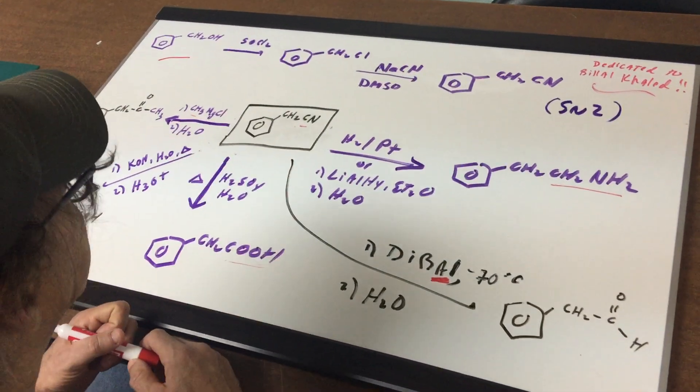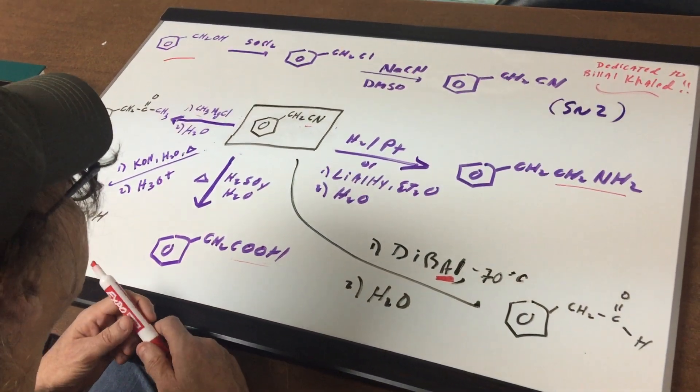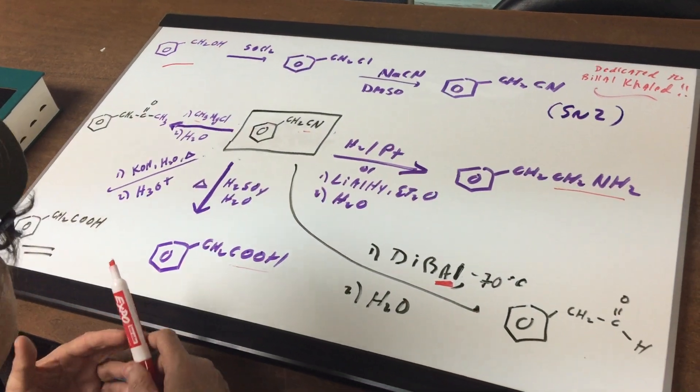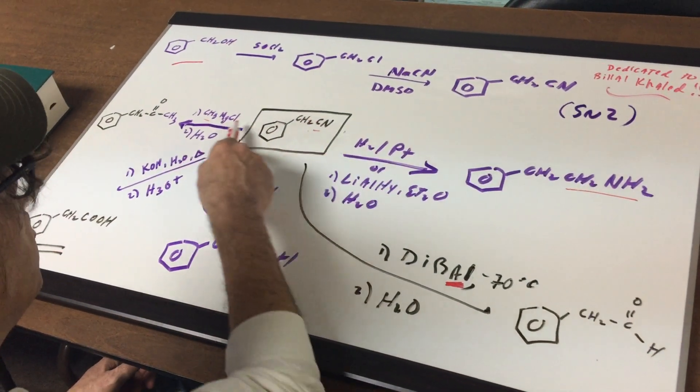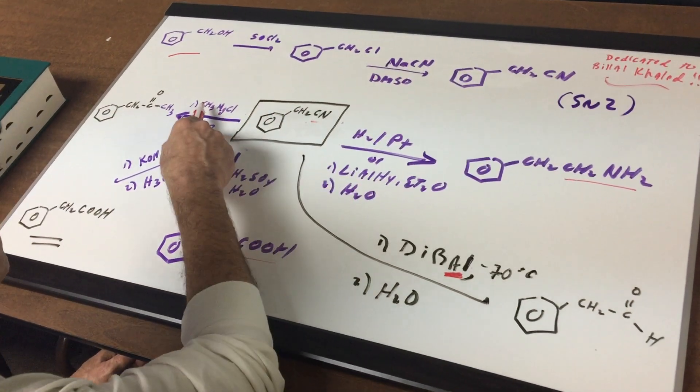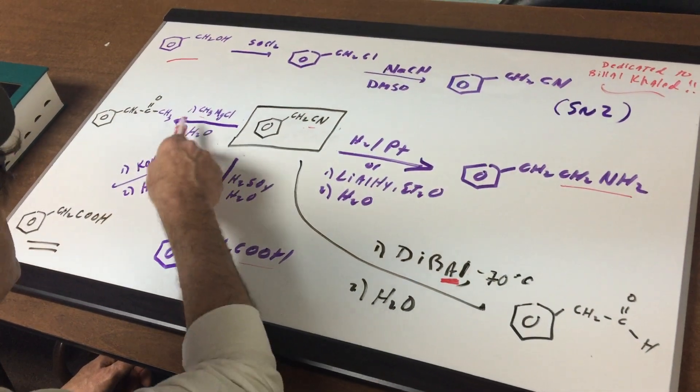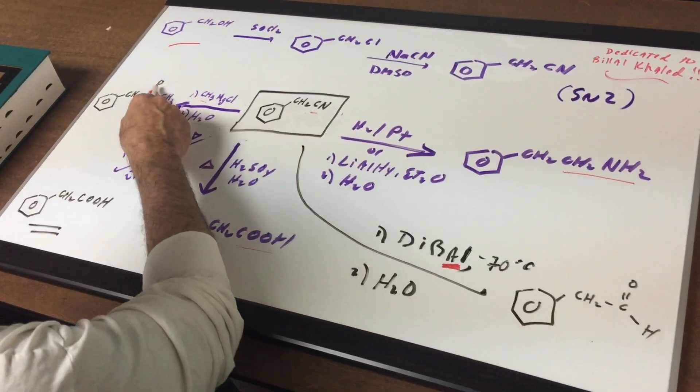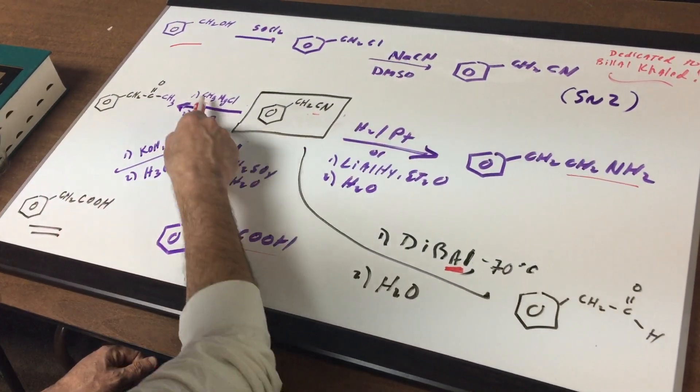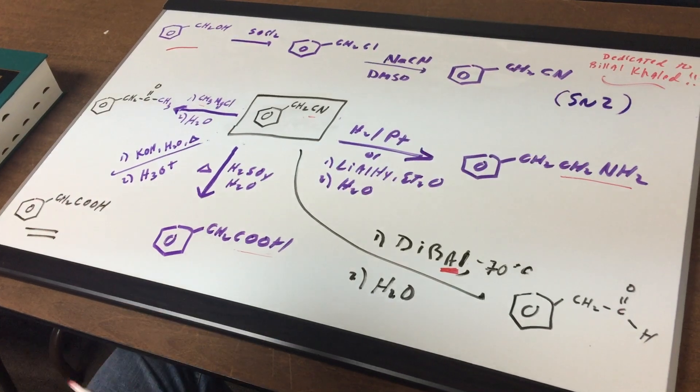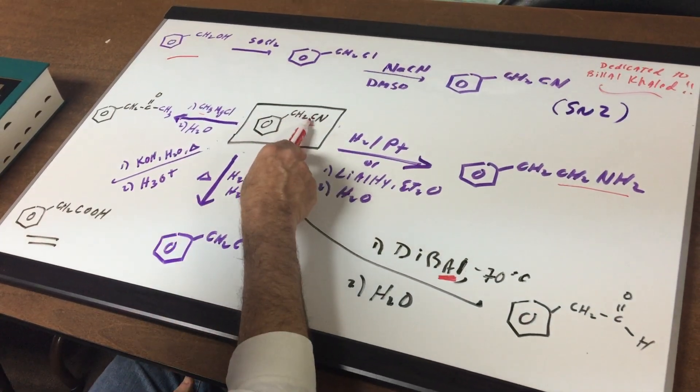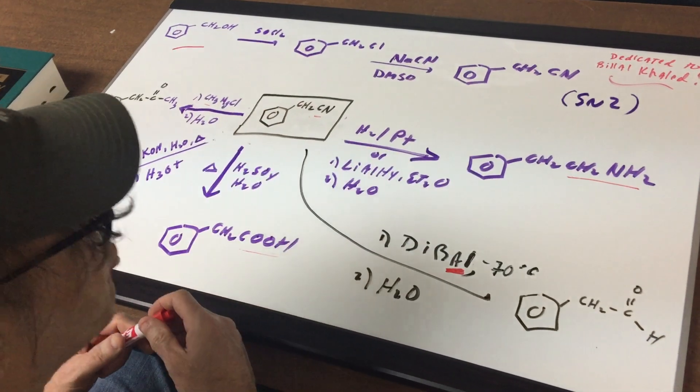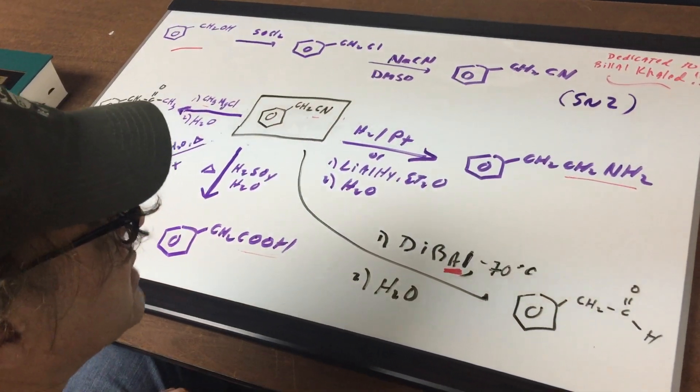And finally, the one most students get wrong is a nitrile can form a ketone when reacted with a Grignard. All you would simply do, we're going to treat this nitrile with methyl magnesium chloride and hydrolyze it. We're going to get rid of the N, replace the N with the double bond O, and put on the R group. Hopefully, you can see that I've gone from a nitrile into a ketone. These are the main reactions I think you need to know for the DAT exam.